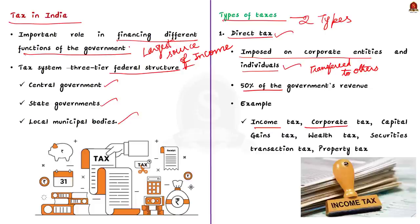Individuals in India earn income from diverse resources. So the direct taxes include capital gains tax, wealth tax, security transaction tax, property tax, etc.